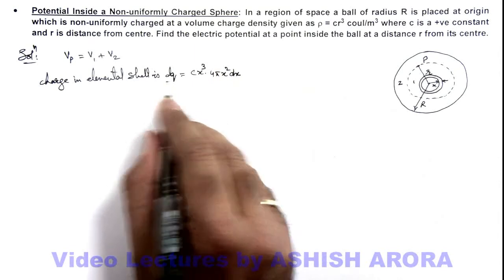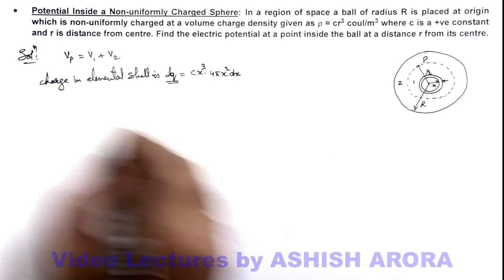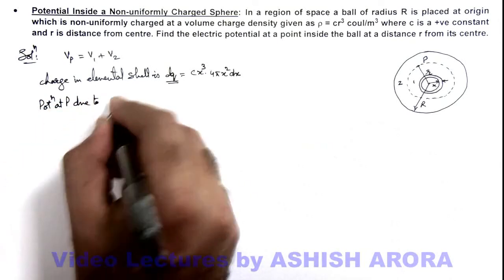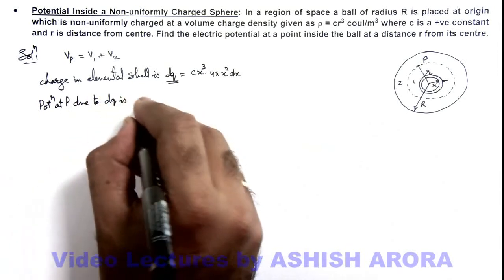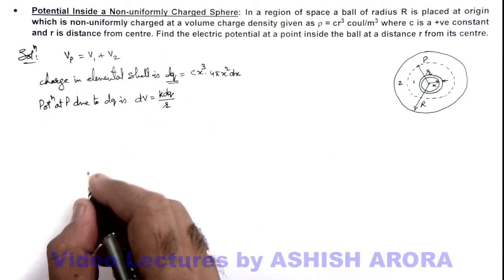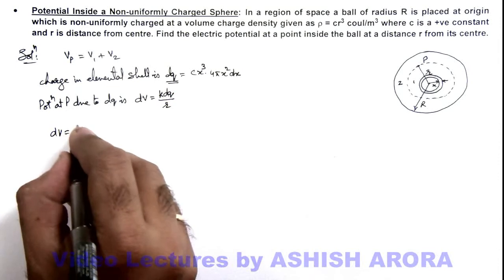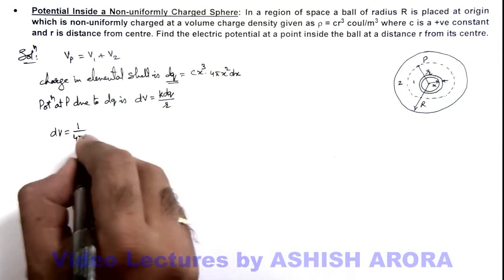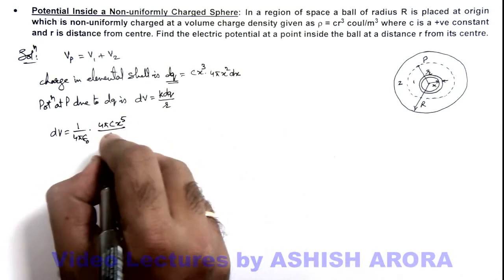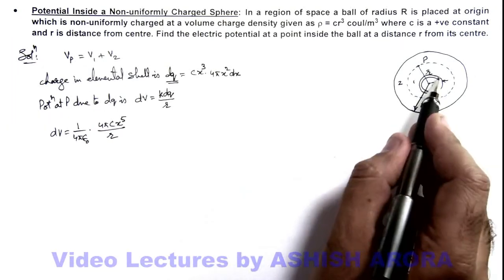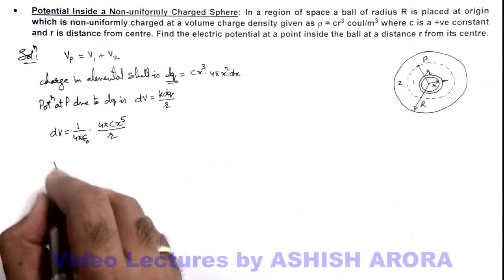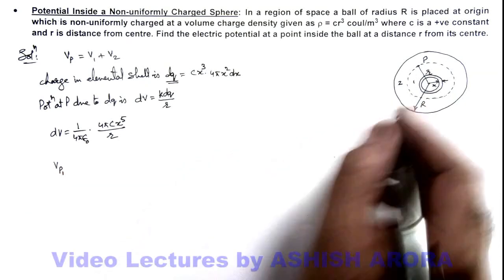Due to this elemental charge dq, the potential at P is dV = k·dq/r. Substituting the values, dV = (1/4πε₀) · (4πcx⁵ dx)/r. For the whole inner sphere of radius r, the potential V1 at P is the integration of dV, and the 4π cancels out giving c/(ε₀·r).